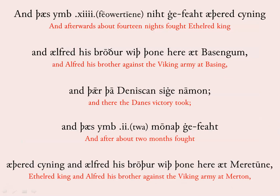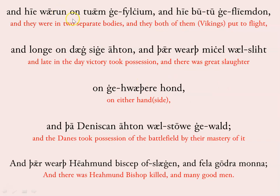The Chronicle continues with further engagements: 'And thas um feawyr ten nicht, gefeaht Aethelred Cyning and Aelfred his brothur with thon here at Basing, and thar tha Denisc an sigenocon.' Then two months later: 'Gefeaht Aethelred Cyning and Aelfred his brothur with thon here at Mertune, and hie wæron on twam gefloccum, and hie butu fleamdon, and longe on dæg sigeodon, and thar Denisc an achton wælstowe gewald. And thær wearth Heocmund bishop ofslægen, and feala godra mona.' — A mixed outcome at the Battle of Merton, where Bishop Heahmund was slain.